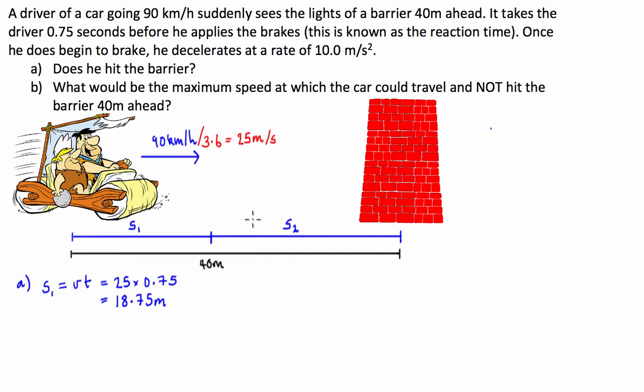So almost half of the stopping distance is now taken up with him reacting to the wall being there. So now what we're going to do is figure out how long is it going to take him to stop from 25 metres a second to nothing? And for this part of the question, we're going to make use of the formula V squared equals U squared plus 2 times A times S. And we're going to try and solve for S. Now, V squared is our final velocity, which hopefully will be 0 if we're able to stop in time. And that's going to equal our U squared, which is 25, our initial velocity, 25 squared plus 2 times acceleration. Now we're decelerating at 10 metres a second, so that's going to be negative 10 times our distance S. And this is going to be S2.